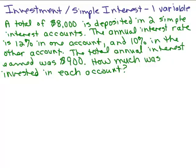We're going to do this investment simple interest problem using one variable. A total of $8,000 is deposited in two simple interest accounts. The annual interest rate is 12% in one account and 10% in the other account. The total annual interest earned was $900. How much was invested in each account?